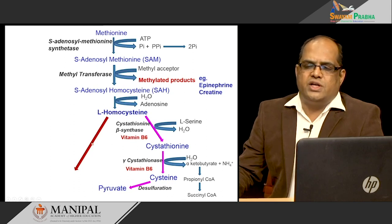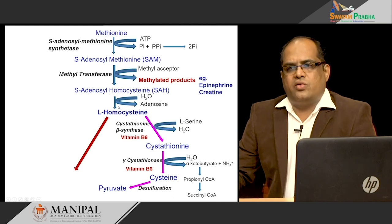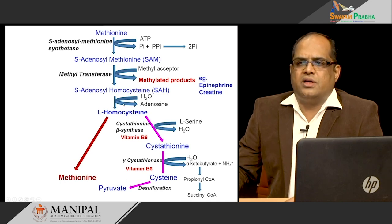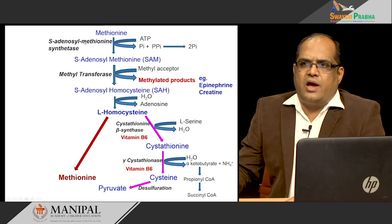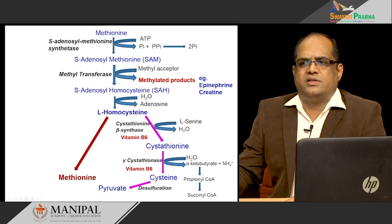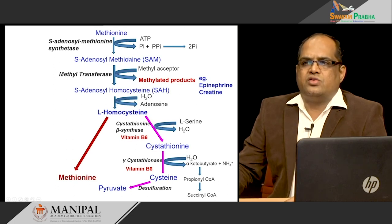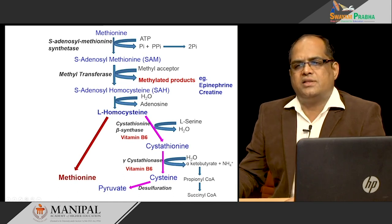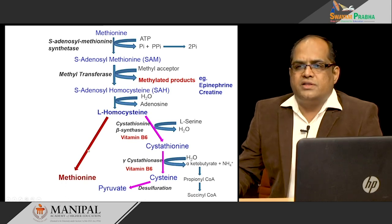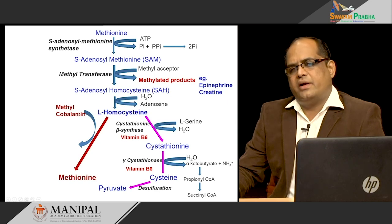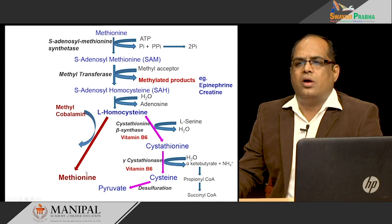The other major pathway homocysteine can go into is synthesis of methionine. If you look at the difference between methionine and homocysteine, there is just a methyl group less in homocysteine. If you provide that methyl group to homocysteine, you can directly synthesize methionine. This is done by methylcobalamin — vitamin B12 provides that methyl group and converts homocysteine to methionine. The enzyme required here is methionine synthase.